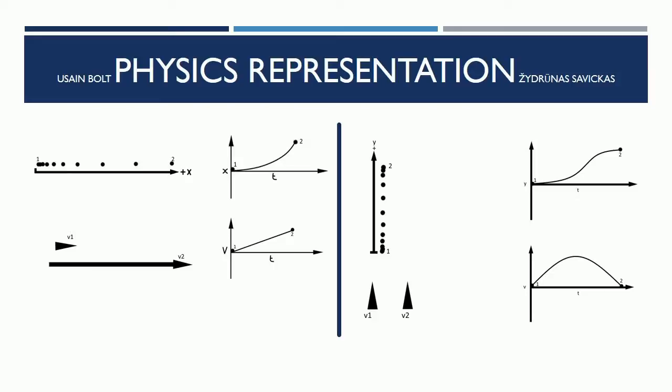Zydranus Savikas' motion diagram shows that the weights move in the positive direction. The velocity vectors show the weights both start and end at rest. The velocity graph shows that the weights speed up in the middle of the lift but start and end at rest. The displacement graph paints the same picture.